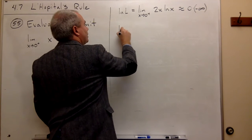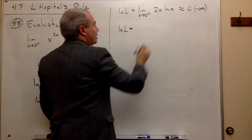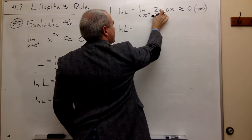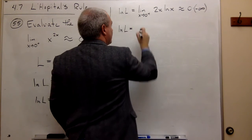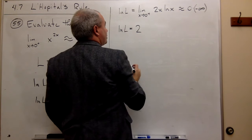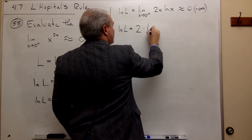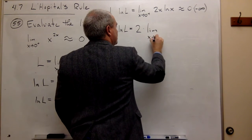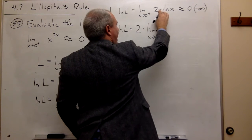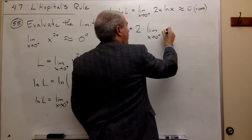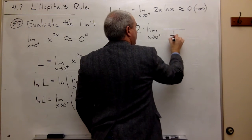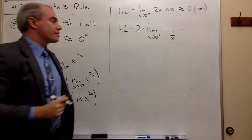So I still have ln of L. What I'm going to do is take that 2x, and the 2 could come out of the limit. Maybe I'll just do that right now. I'll pull the 2 out. And then I have the limit as x goes to zero from the right. This x, instead of leaving it on the top, let's put it on the bottom of the fraction. But if I put it on the bottom, then it's 1 over x.